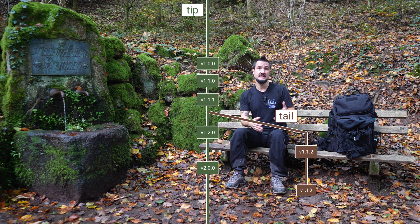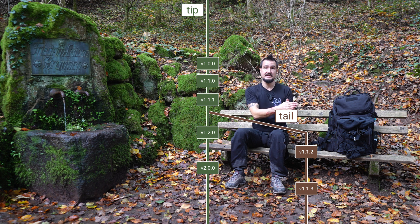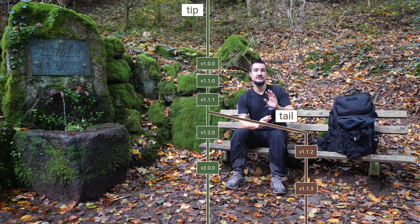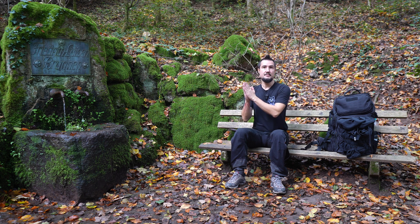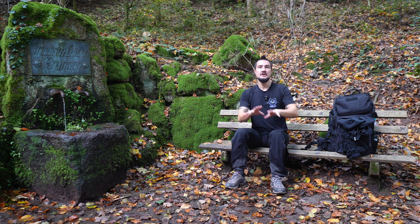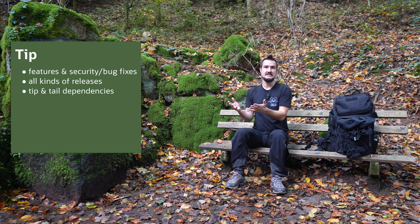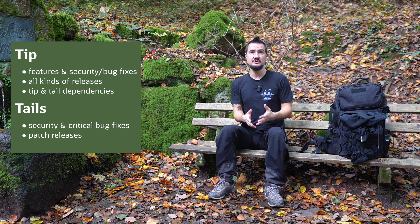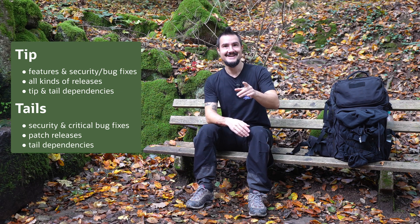Setting those terms aside, so far this is common for every project that supports several release trains. What's essential to TNT is what additions to the tip get backported to the tails: barely anything. No features, no performance improvements, only critical bug fixes, but all security fixes. This means there will only ever be patch releases from a tail. There's another important difference between tips and tails: their dependencies. A project's tip can pick and choose whether to require their dependencies' tip or tail releases, but a tail should only depend on the tail releases of each dependency. Tails only see backports of security and critical bug fixes, only release patch versions, and only depend on other tails. And that's how you tame the dragon.